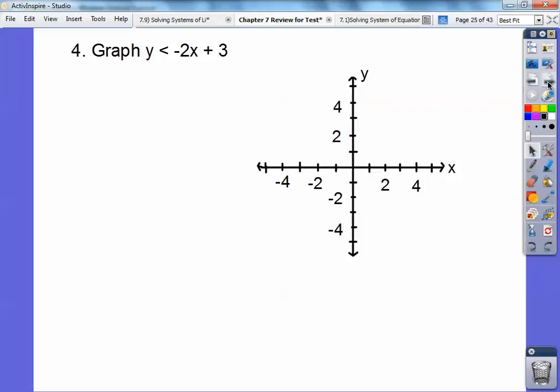Graph this inequality. This is going to be a line and we're going to be shading. This is a dotted line because there's no equals bar right there. So let's go do the plus 3 first. There's the plus 3. Then I'm going to use this slope, -2, which is -2 over 1. Down 2 to the right 1. It's a dotted line.